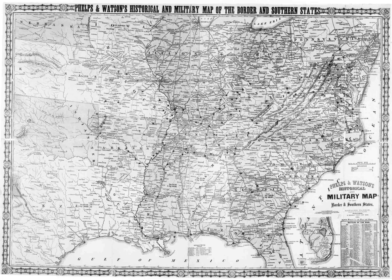Reconstruction, as directed by Congress, did not apply to the border states because they never seceded from the Union. They did undergo their own process of readjustment and political realignment after passage of amendments abolishing slavery and granting citizenship and the right to vote to freedmen.